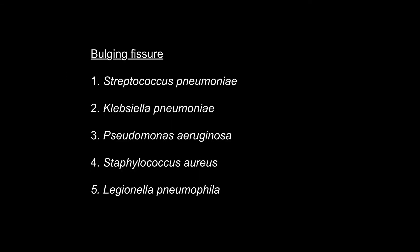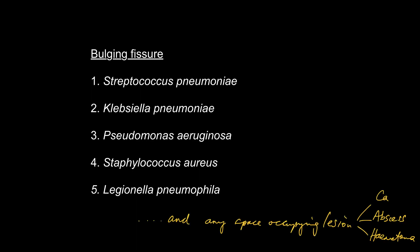So what are the causes of a bulging fissure with right upper lobe consolidation? Streptococcus pneumoniae or pneumococcal pneumonia is the commonest, then Klebsiella. Don't forget Pseudomonas and Staphylococcus aureus. But increasingly, Legionella can cause this bulging fissure phenomenon. Bad cases of TB can also be implicated. But don't forget that any cause of a space-occupying lesion that abuts the fissure can cause a bulging fissure — so a cancer, an abscess, a hematoma.